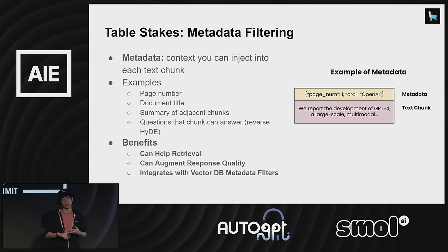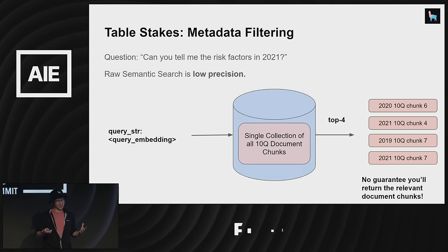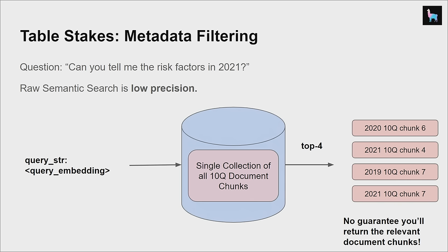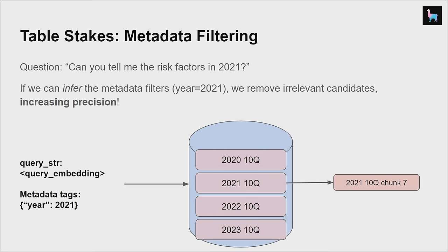Metadata can help retrieval and augment your response quality, and it integrates with vector database filters. For example, if the question is over an SEC 10-Q document — like 'can you tell me the risk factors in 2021?' — raw semantic search has very low precision and might return stuff from other years. But if you have access to the document metadata, you can combine structured query capabilities by inferring metadata filters like a WHERE clause in SQL — like year equals 2021 — combined with semantic search to return the most relevant candidates, improving precision.